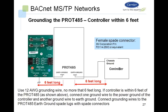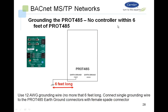Grounding the PROT45: if there is a controller within six feet, connect the chassis ground from the controller to earth ground and one of the earth ground plugs on the PROT45. The other earth ground connection goes to earth ground. Use 12-gauge grounding wire no more than six feet long. If there is no controller within six feet of the PROT45, connect the 12-gauge grounding wire directly to earth ground using the female spade lug connector.